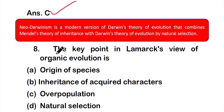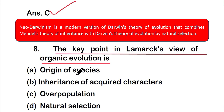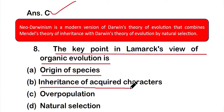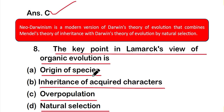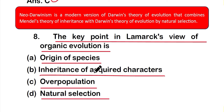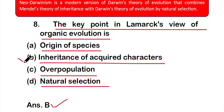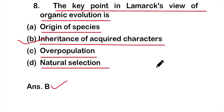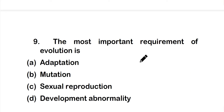Question 8: The key point in Lamarck's view of organic evolution is — option A: origin of species, option B: inheritance of acquired characters, option C: overpopulation, or option D: natural selection. The correct answer is option B — inheritance of acquired characters. The key point in Lamarck's view of organic evolution is the inheritance of acquired characters.